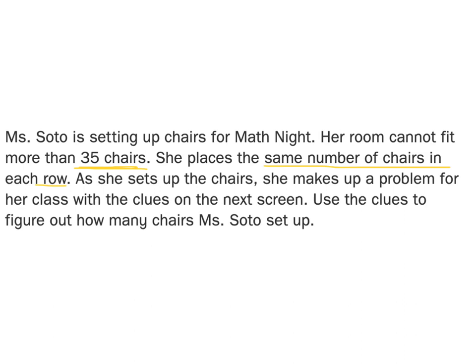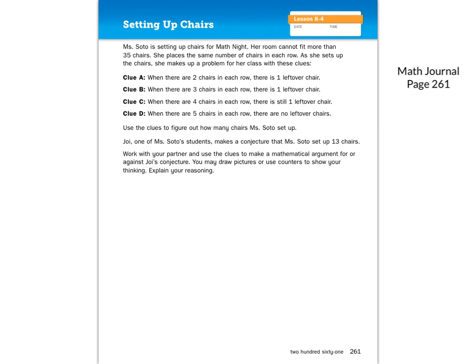We know 35 chairs total and the same number of chairs in each row. We're going to take out our math journals now and tackle this problem together — it's on page 261. I'm going to underline the key details: 35 chairs is the max, and same number of chairs in each row. Then we have clue A, clue B, clue C, and clue D.